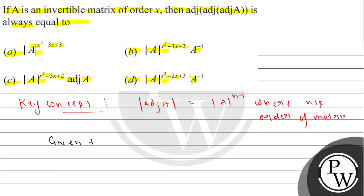Given that A is an invertible matrix of order x. Next,